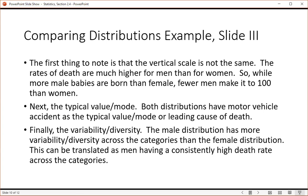Next, the typical value of the mode. Both distributions have motor vehicle accident as the typical value or the mode. And then finally, the variability. The male distribution has more variability or diversity across the categories than the female distribution. The way that you could translate that is that there's a more consistent high death rate across the categories for men than there is for women.